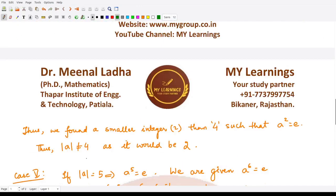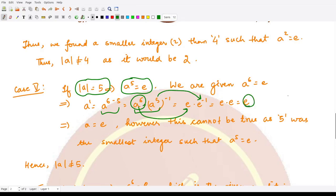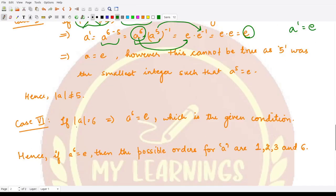In the fifth case, if we suppose the order of a to be 5, then a raised to power 5 has to equal the identity element, and we are also given a raised to power 6 equals e. Writing 1 as 6 − 5 and using the law of exponents: a¹ = a⁶ · (a⁵)⁻¹ = e · e⁻¹ = e. So a raised to power 1 equals e, and 1 is less than 5. Therefore 5 is not the smallest integer satisfying the condition, and it cannot be the order.